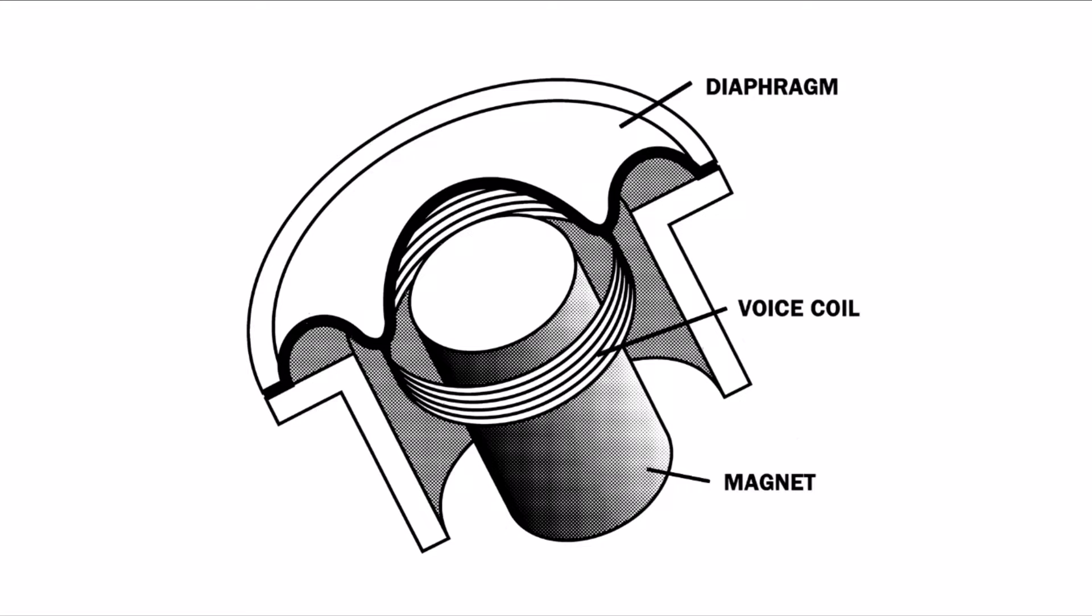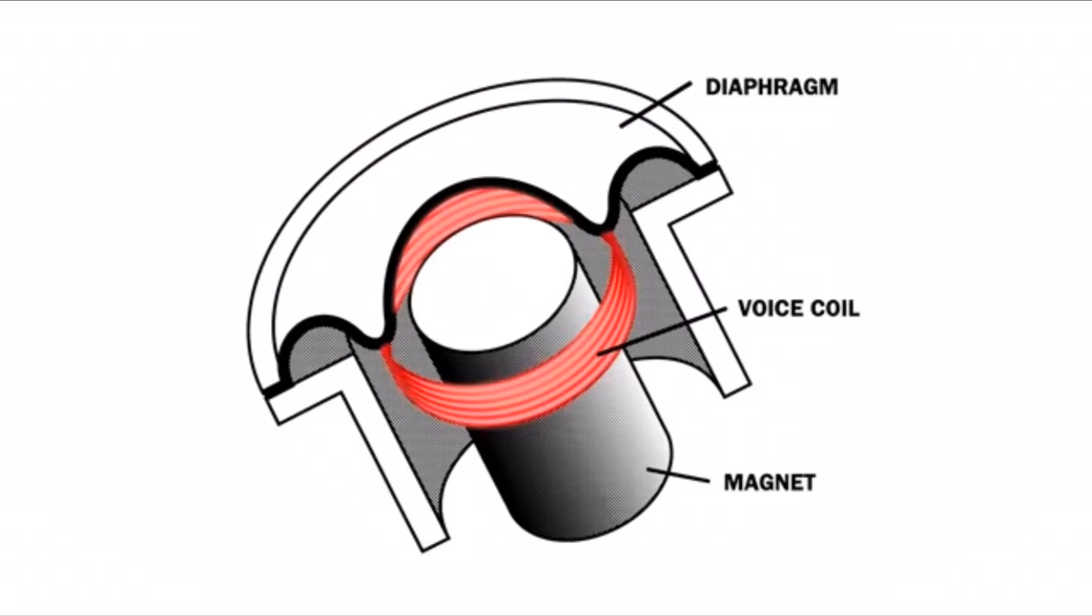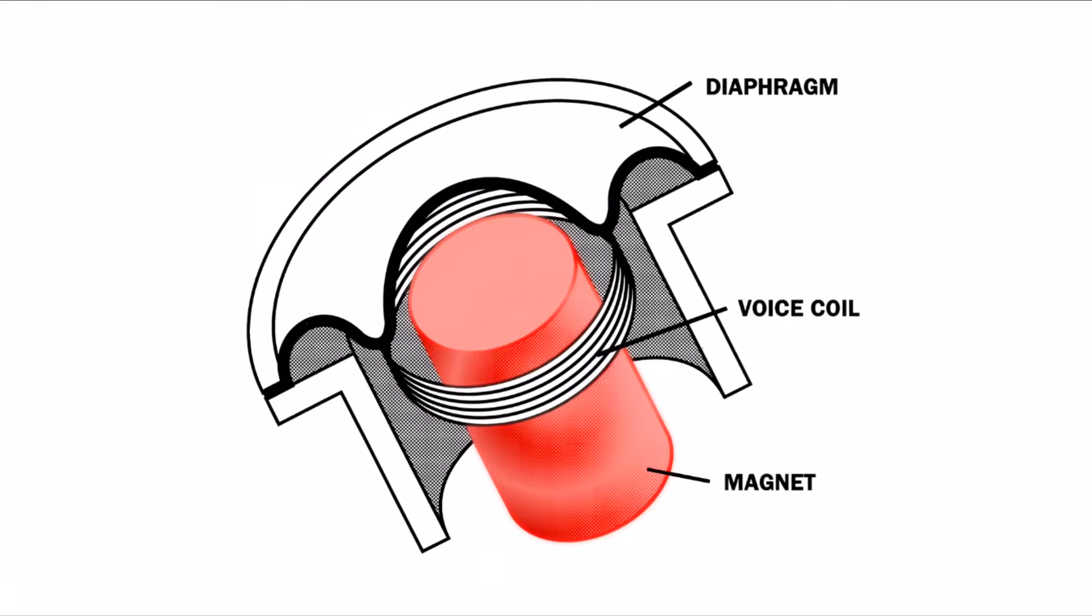A dynamic microphone is made up of three main components. We have a diaphragm, a voice coil which is attached to the diaphragm, and a magnet which is permanently charged which creates a magnetic field.